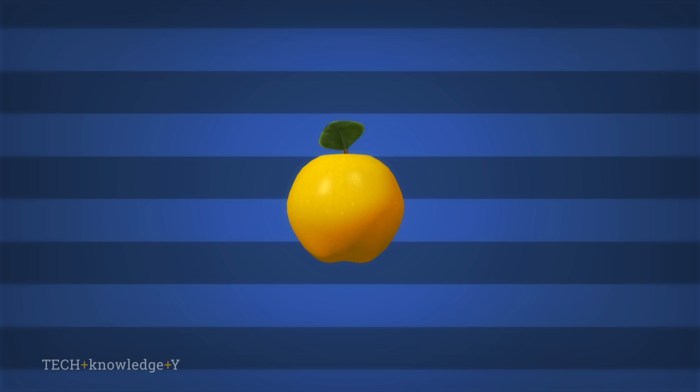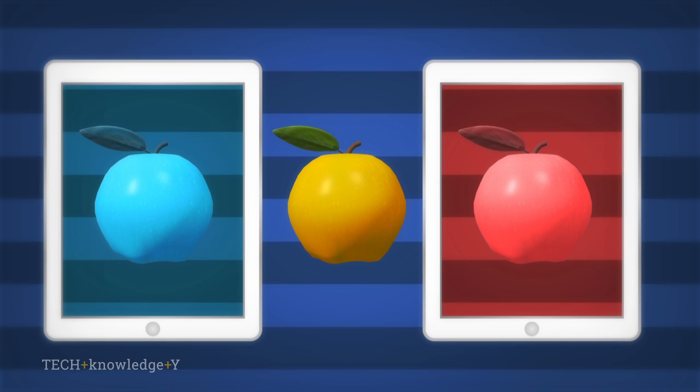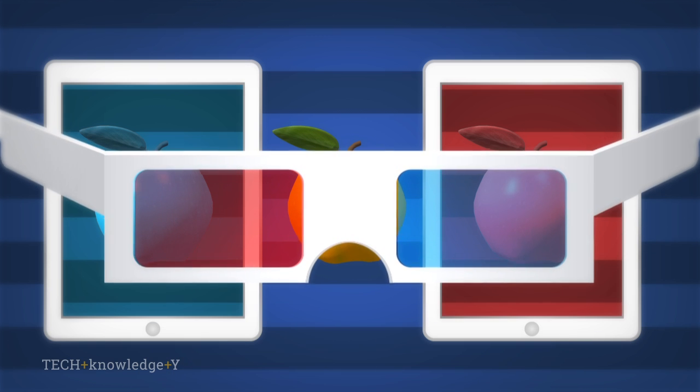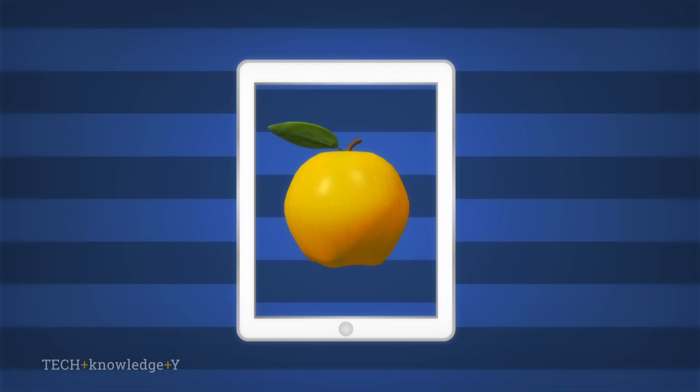If we want to do a little bit better, we could take two photographs next to each other and then send one of those images to one of your eyes and the other image to the other eye. This is how 3D movies work and it gives them depth.